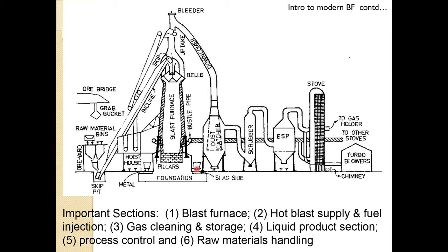Slag and metal come out at the bottom. The important sections of the blast furnace system are: the blast furnace itself; the hot blast supply (the stove and gas cleaning and storage); the liquid product section where metal and slag are taken out; process control for the whole plant; and raw material handling, which is also a special section. We will go through each one in overview.